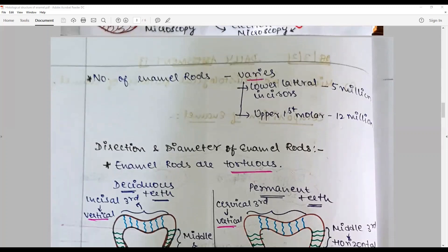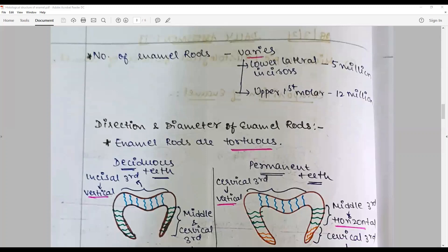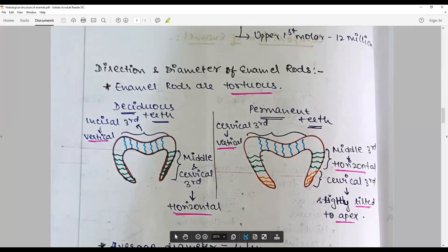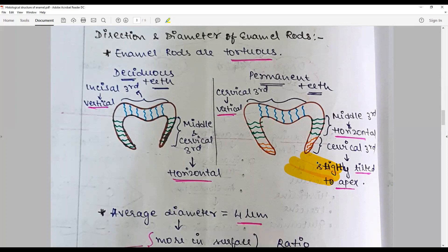Directions - enamel rods are tortuous and they are not in a straight line, they follow a scalloped line. In the deciduous, in the occlusal and the incisal they are often vertical, and the middle and cervical third they are more or less horizontal. In the permanent tooth, the cervical third or the occlusal third they are vertical, whereas the middle they are horizontal. As we go to the cervical third, they are slightly right to apex. The direction should be like this. Don't make this mistake, it should be directed oriented in this fashion, going towards the side.